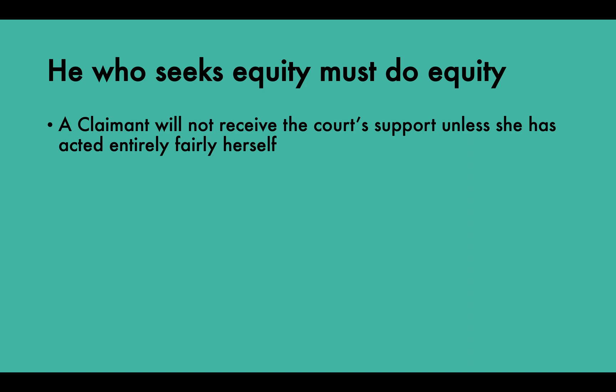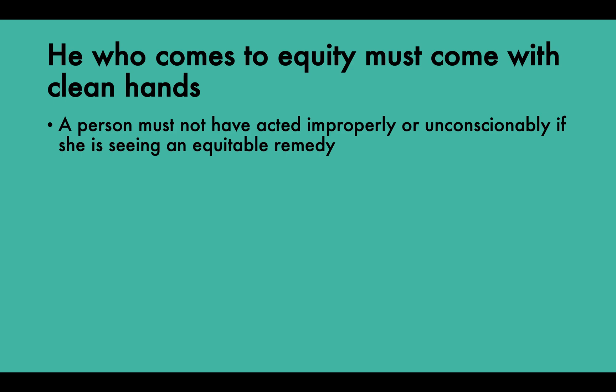He who seeks equity must do equity: a claimant will not receive the court's support unless she has acted entirely fairly herself. In relation to injunctions, for example, the court will award an injunction to an applicant during litigation only where that would be fair to the respondent and where the applicant herself undertakes to carry out her own obligations under a court judgment. A court of equity will not act in favour of someone who has, for example, committed an illegal act.